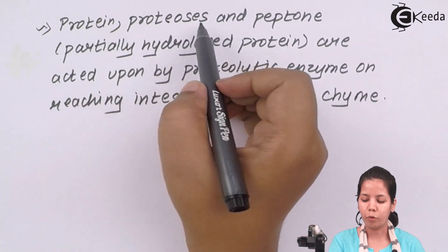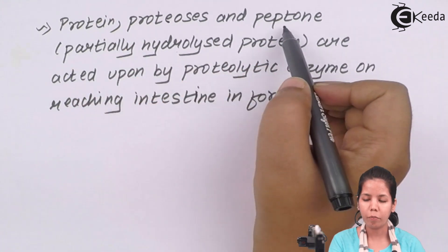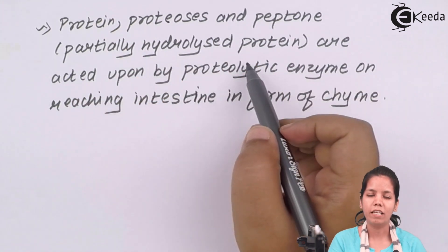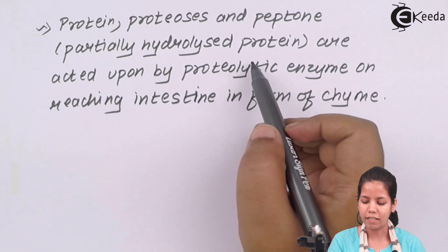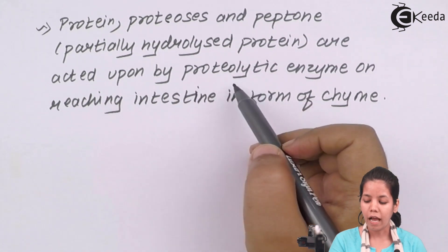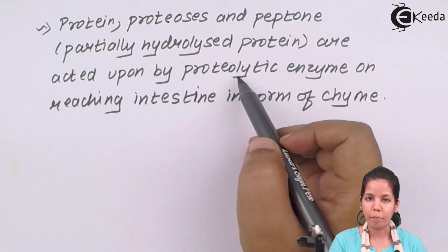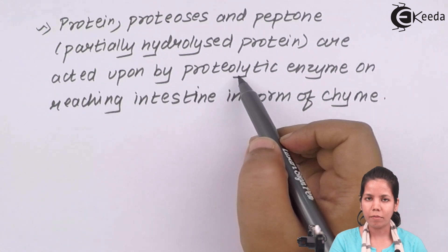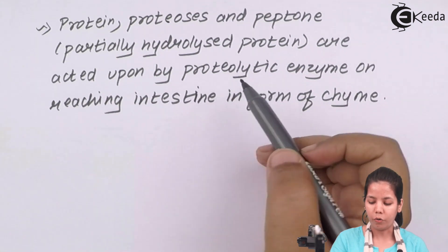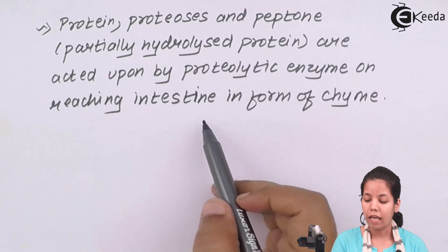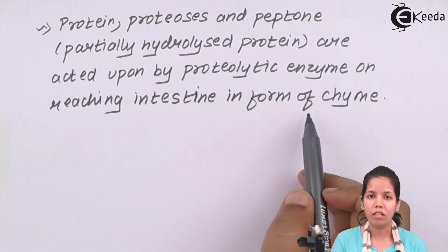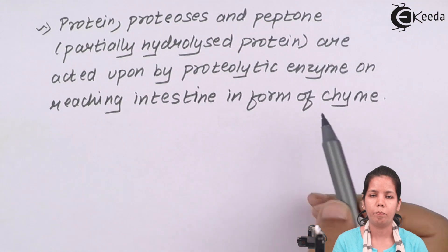Proteins, proteases, and peptones — the various undigested or partially digested forms of proteins — are acted upon by proteolytic enzymes, which help to break down proteins on reaching the intestinal region. When they reach, they arrive in the form of chyme, or a small bolus form.